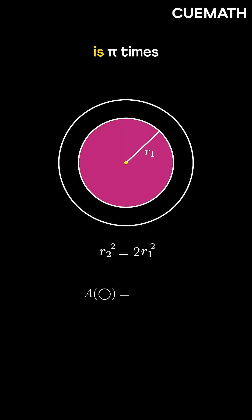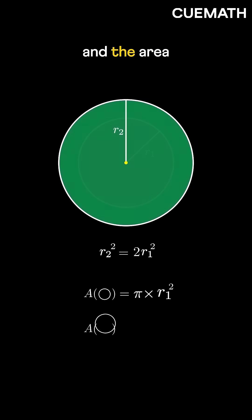The area of the smaller circle is pi times r1 squared, and the area of the larger circle is pi times r2 squared.